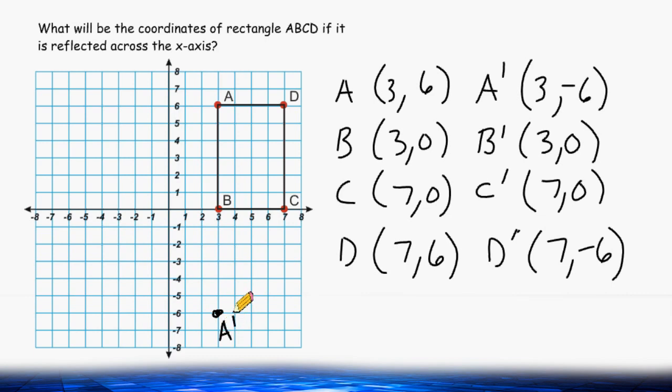B is located at (3, 0). Notice that it did not move from its original spot because it is right on the x-axis.